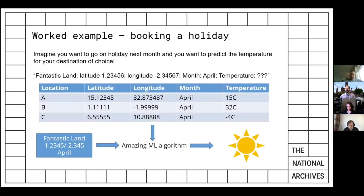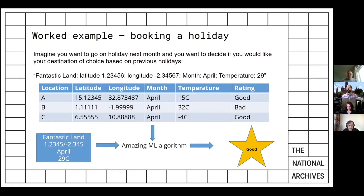Here's an example of the two types. In a prediction task: I want to go on holiday but I don't know the temperature of my destination. I take data on places around the world and their temperatures in the month I'm going, train a machine learning algorithm to work out the relationship between latitude, longitude, and temperature, then input my country and get a temperature number back to decide whether to go. The classification version might use the same data, but this time I just want a rating — good or bad holiday — based on previous holidays I've had.